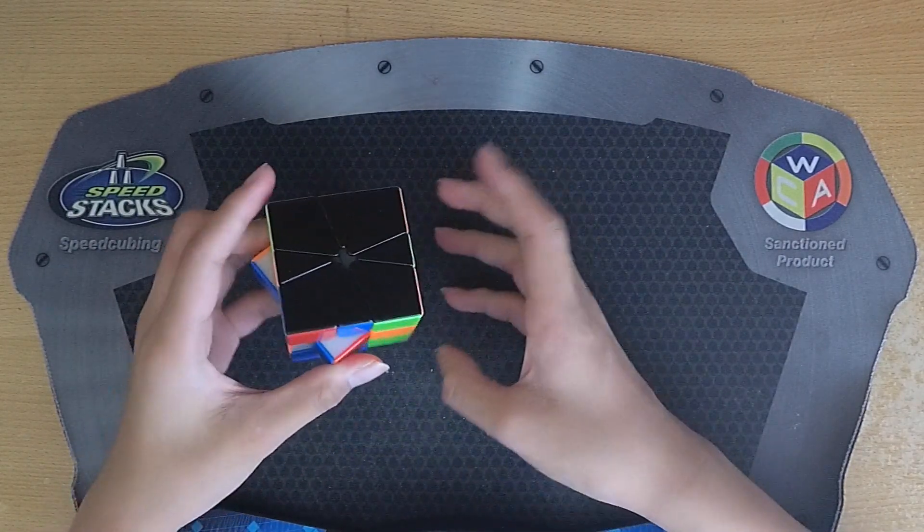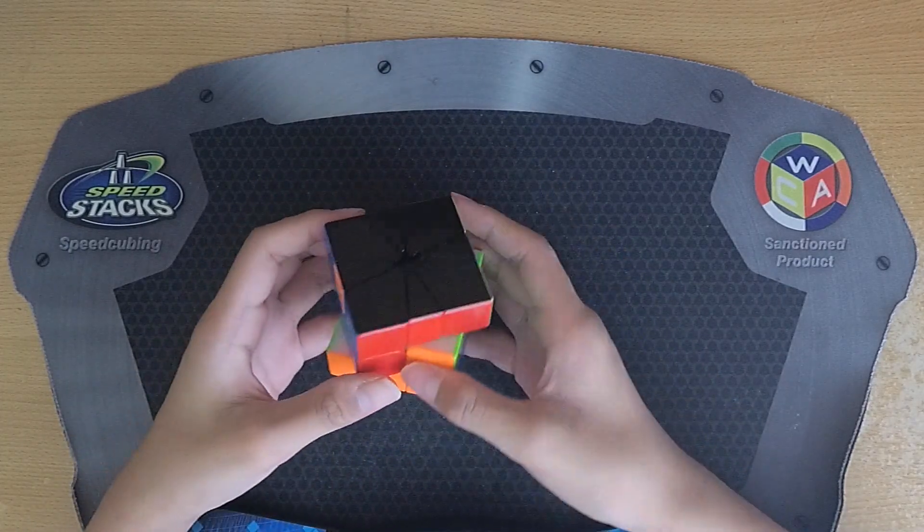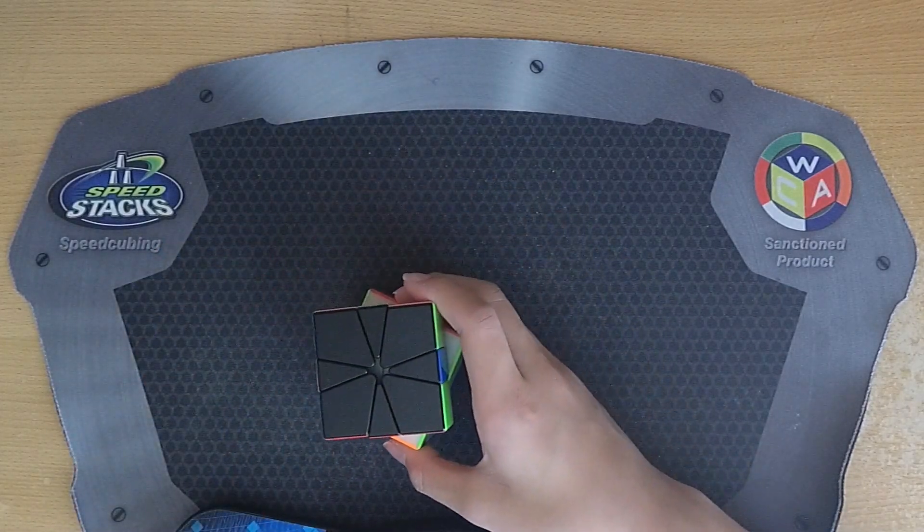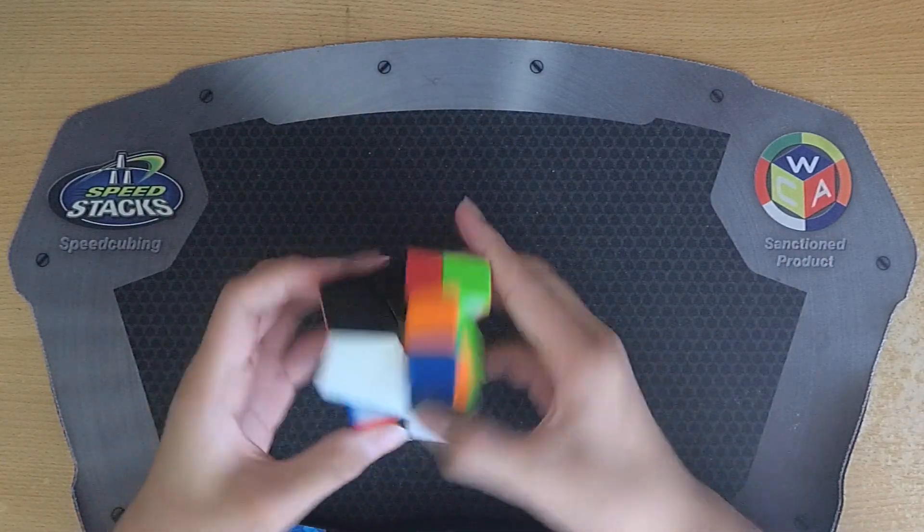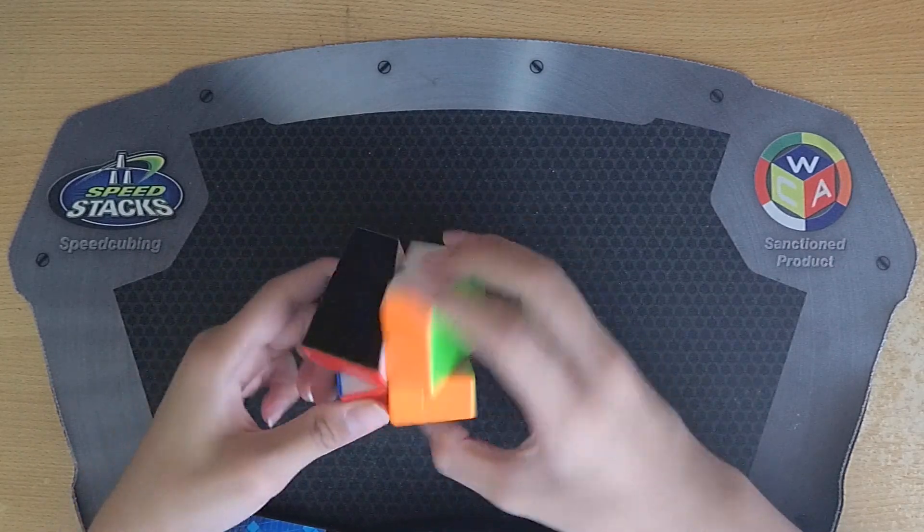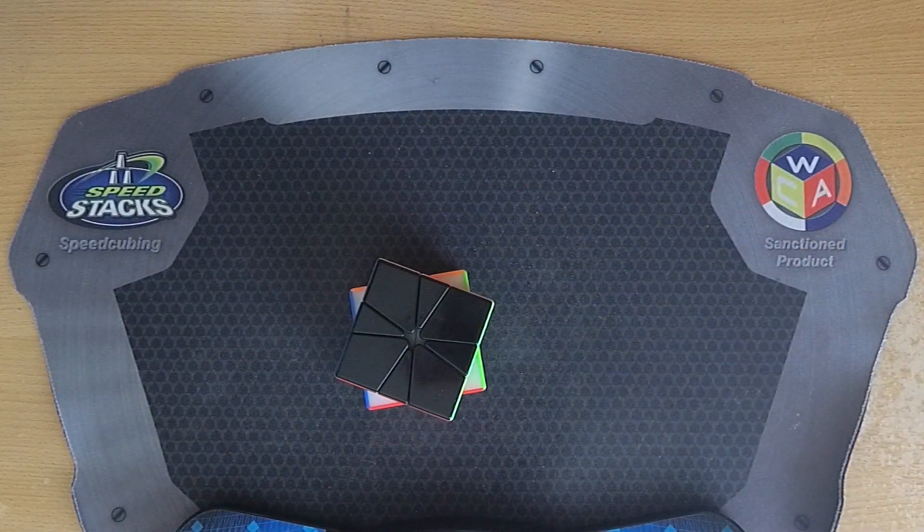What I ended up doing was JJ into a U-perm which I guess isn't the best most slice efficient solution, but it ended up working pretty well until I locked up and didn't do the last turn. So it was a 7.49.